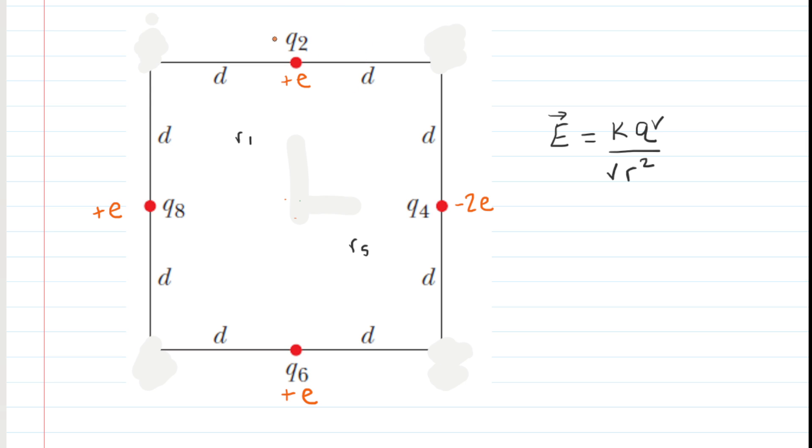Now by now you can see where this is going for Q2 and Q6. Again, they are equidistant to the center. They have the same amount of charge, positive e, and their electric fields will be oppositely directed. You can show that to yourself by using the positive test charge. So we can get rid of those charges as well.